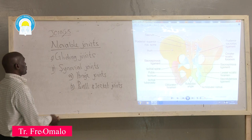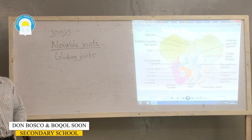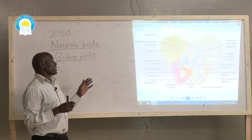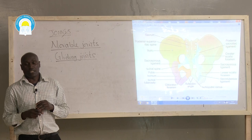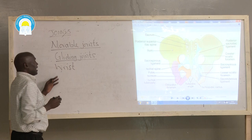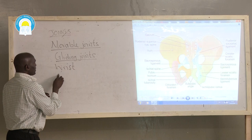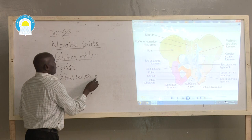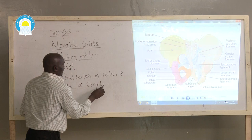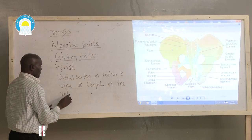Gliding joints are connective points where two or more bones articulate with each other, and the bones slide over each other. Gliding joints are found at the wrist, formed between the distal surface of the radius and ulna and the carpals. Gliding joints are also found at the sides of the pelvis.